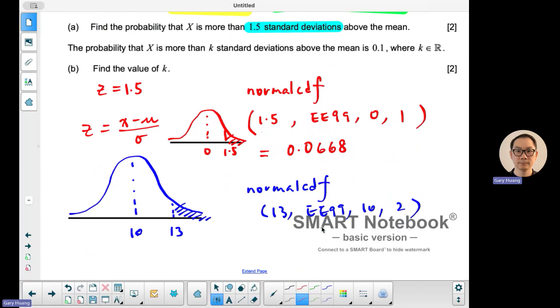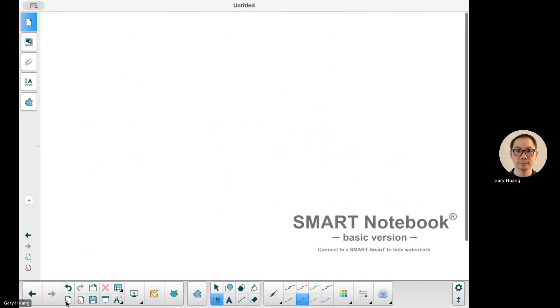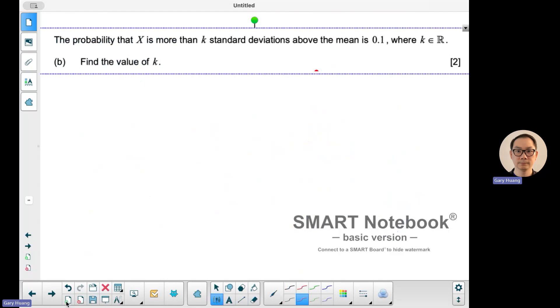Part B. The probability of X is more than k standard deviations above the mean is 0.1.